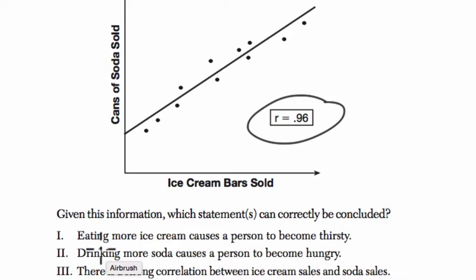So let's go through the choices. Eating more ice cream causes a person to become thirsty. Well, that's a little bit ridiculous, right? And we know that. But the idea is that the word causes is ridiculous. If there's a correlation, a connection between your data, it doesn't mean one causes the other.